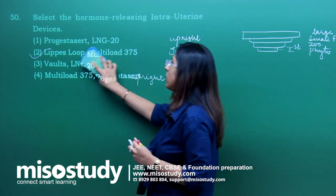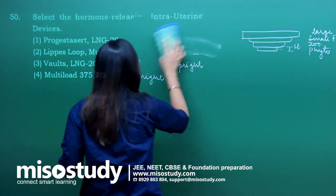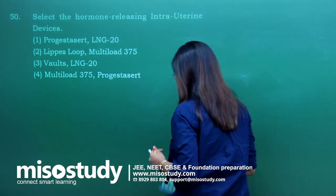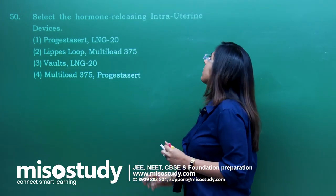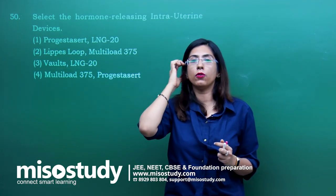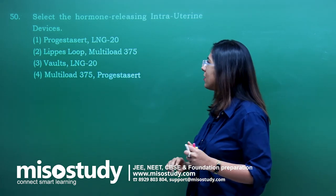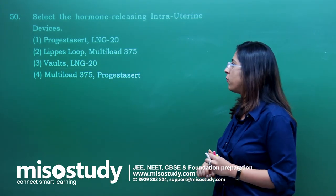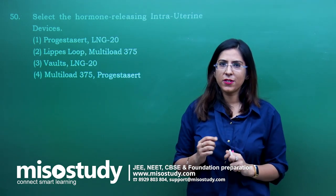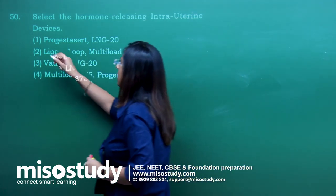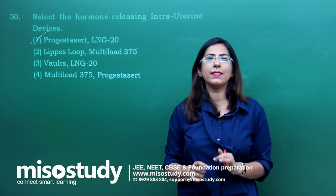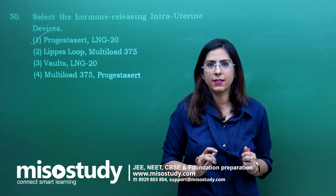Question number 50 — from the chapter reproductive health. Select the hormone-releasing intrauterine devices. The four options given are progesterone cert, LNG20, Lipase loop, multiload 375, and multiload progesterone cert. In this case the correct option is first — progesterone cert and LNG20. These are the hormone-releasing intrauterine devices.